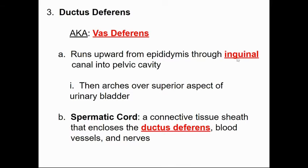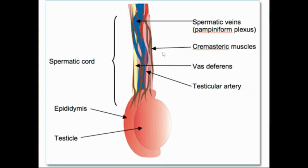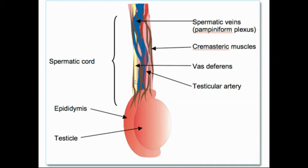The ductus deferens goes up through the inguinal region — the groin area where the leg meets the trunk; you may have heard of an inguinal hernia in this region. It goes upward over the urinary bladder. The vas deferens is enclosed within a larger structure called the spermatic cord, which is a connective tissue containing the vas deferens, blood vessels, and nerves all bundled together.